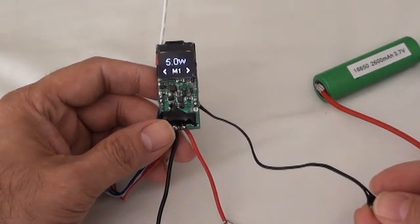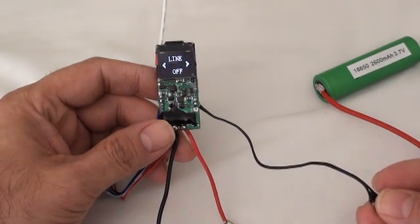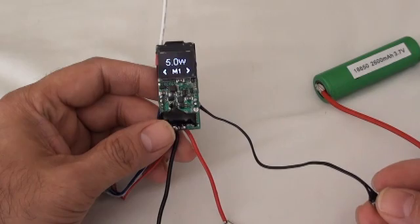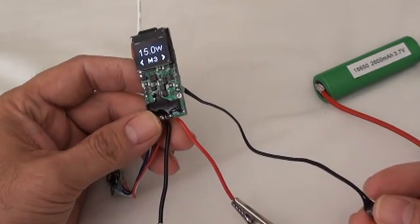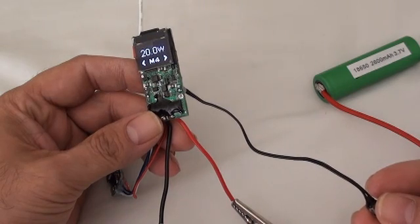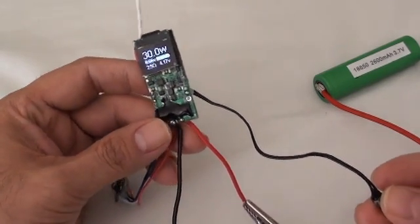And five clicks puts you into the menu system. There's exit, system, line or link, and then the five memory banks. Put it on memory bank five, which is 30 watts, then exit out.